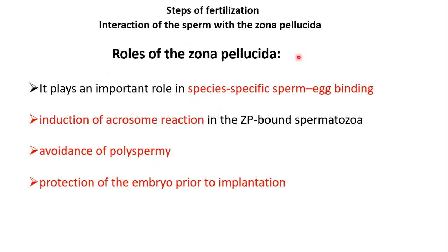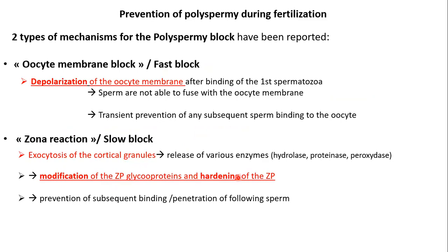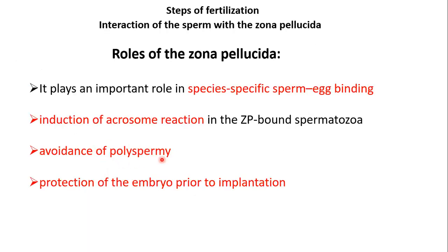In summary, we have two mechanisms in the block of polyspermy: the first is the oocyte membrane block, also called the fast block, and the second is the zona reaction, which is the slow block of polyspermy. As a conclusion regarding the role of the zona pellucida: it plays a role in species-specific sperm-egg binding, induction of the acrosomal reaction through binding to ZP1, ZP3, and ZP4, and in the block of polyspermy through hardening of its glycoproteins after cortical granule exocytosis. It also protects the embryo prior to implantation.